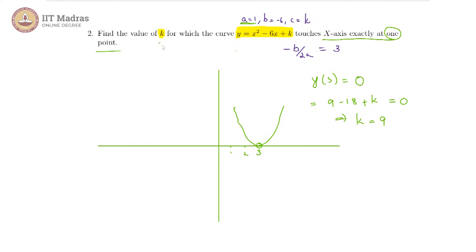That is it. So k equals 9. When that happens, our equation is y equals x squared minus 6x plus 9, and it has its vertex at 3 comma 0.